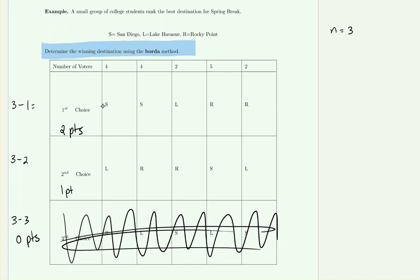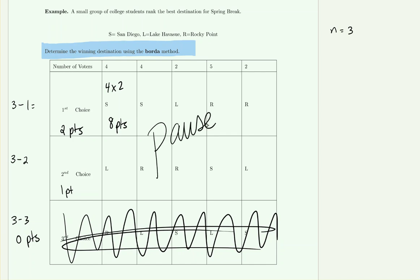For small numbers you can do this mental math easily. There were four voters who ranked San Diego first, contributing eight points since four times two equals eight. Pause the video now, fill in all first-place and second-place point cells for the table, then unpause to check your work.